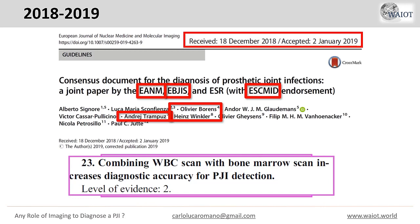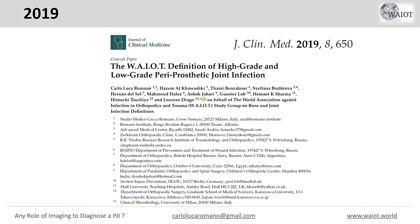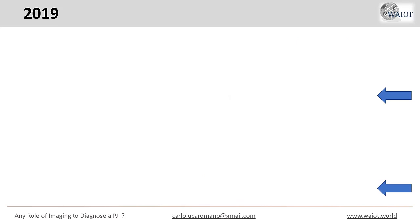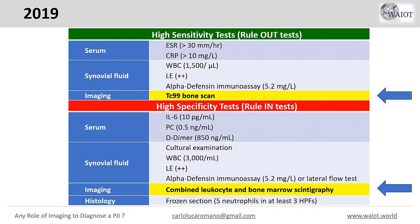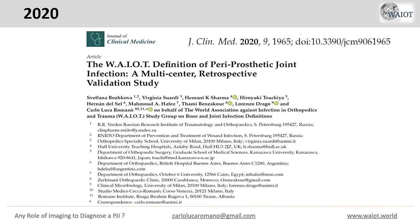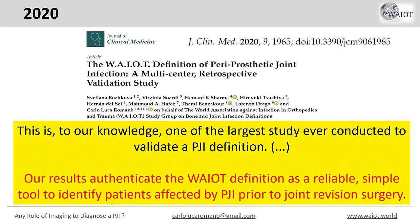In 2019, finally, the WIOT — the World Association Against Infection in Orthopedics and Trauma — introduced a definition of periprosthetic joint infection that finally includes imaging techniques. Technetium bone scan is identified as one of the main rule-out tests to exclude an infection, and combined leukocyte and bone marrow scintigraphy is considered a highly specific ruling-in test. This definition has been validated in a large multicenter multinational trial published in 2020, one of the largest studies ever conducted to validate a PJI definition. Currently, the orthopedic community has this definition that includes imaging.